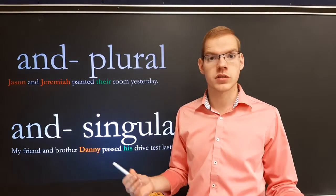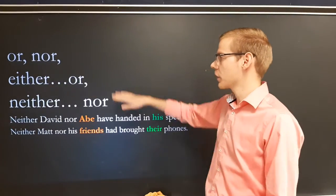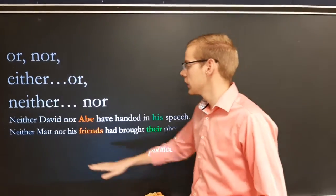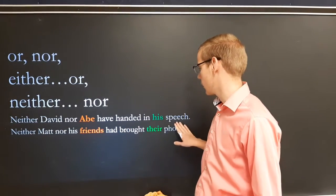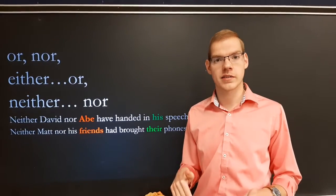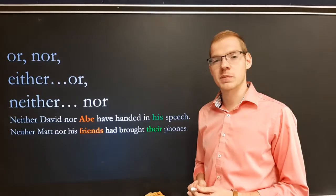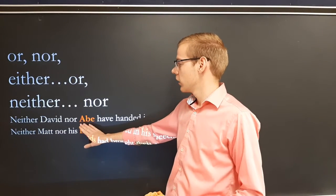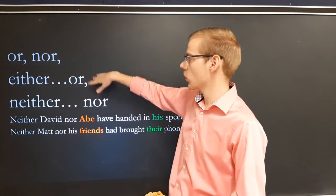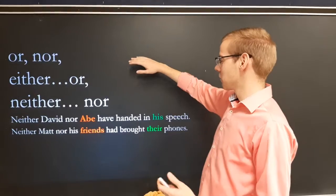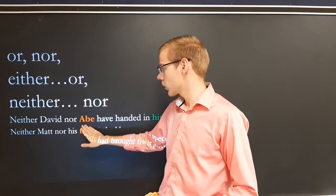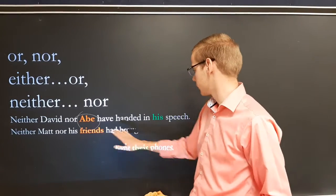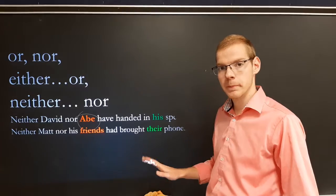Now, there are exceptions, as the English language has them. If we have 'or,' 'nor,' 'either/or,' or 'neither/nor,' then we take a look at the last word of the paired subjects. For example: 'Neither David nor Abe has handed in their speech.' — Actually, it should be 'his speech,' looking at the last word, 'Abe,' which is singular. So it's not 'their speech,' but 'his speech.'